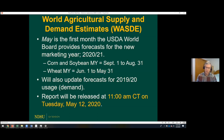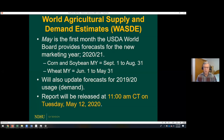USDA will also update demand side or usage numbers for the old crop. There may be slight adjustments on the production side — USDA was going to resurvey corn and soybean farmers in several states, except North Dakota, to confirm harvested acreage and average yields. But I don't expect those numbers to change much. This will really be an update on the usage forecast. The report always comes out at 11 o'clock central time — this Tuesday, May 12th.